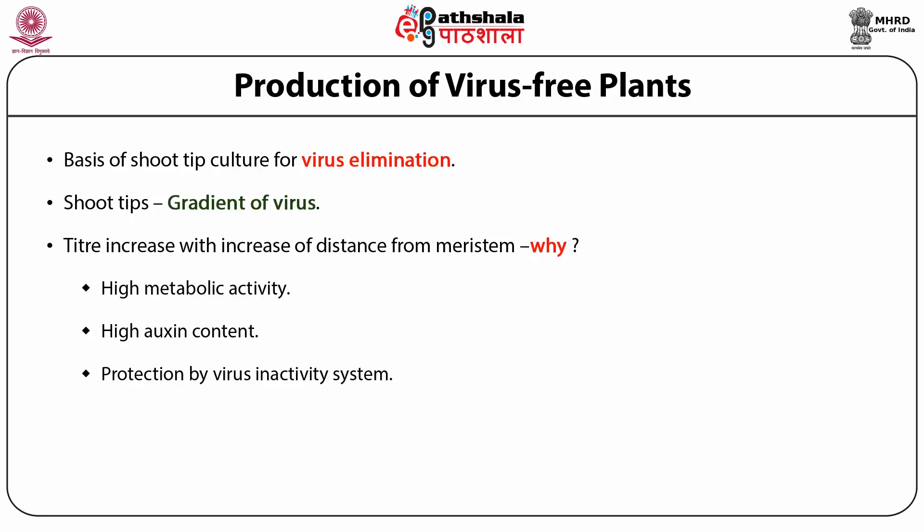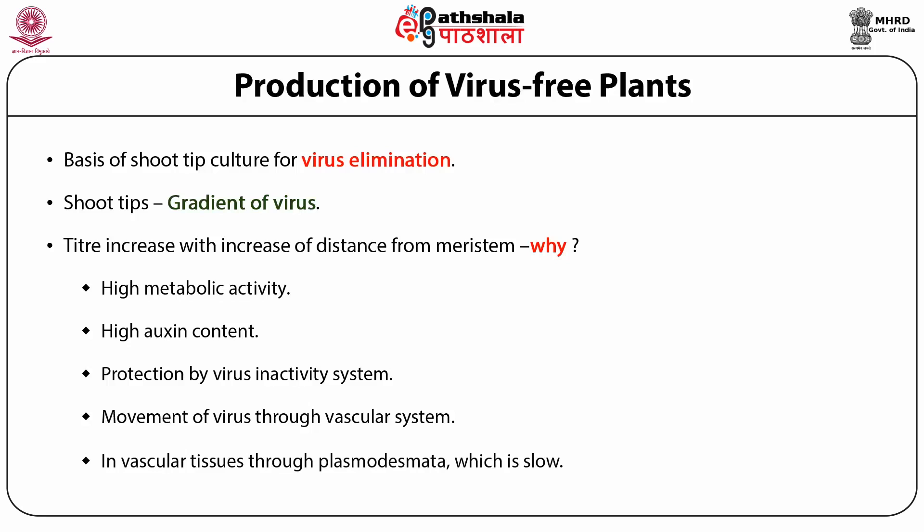In plants, the virus moves through the vascular system. The shoot tip does not have the vascular system — the vascular system terminates well before the meristem. In the tissues where there is no vascular tissue, the virus moves through the plasmodesmata from one cell to the other, but this method is extremely slow. Therefore, the movement and migration of virus in the plant body is not able to keep pace with the growth of the shoot tip.